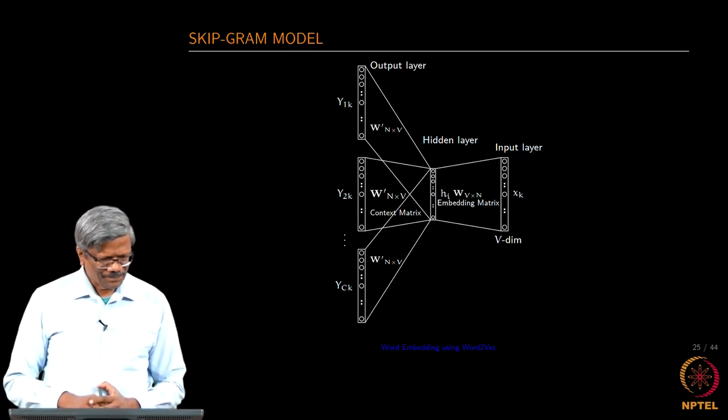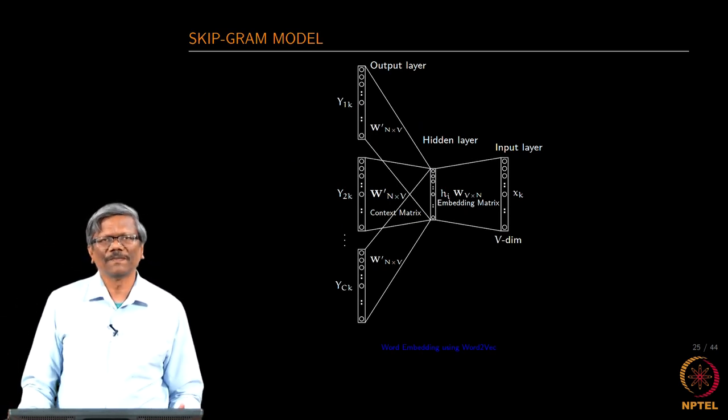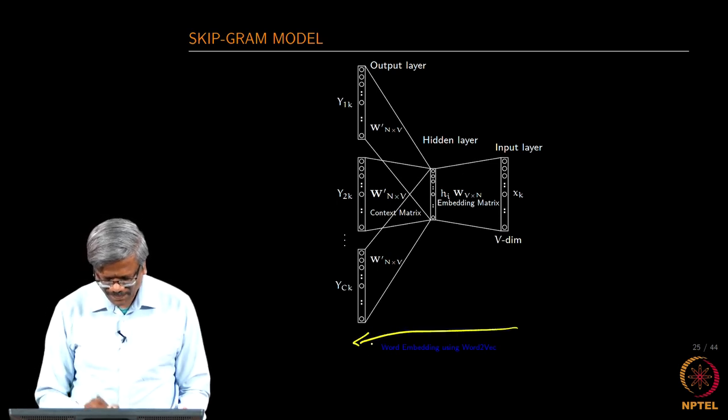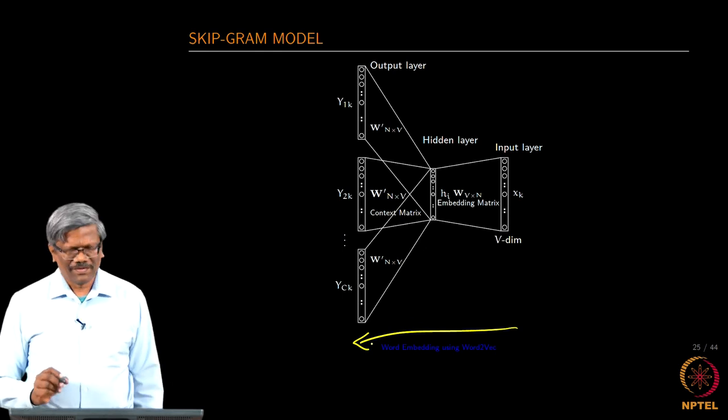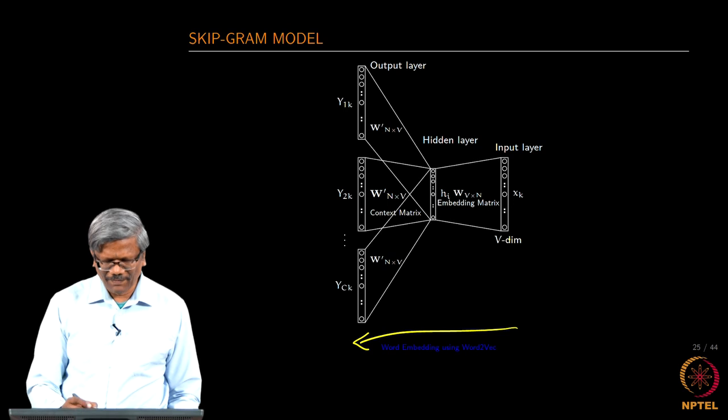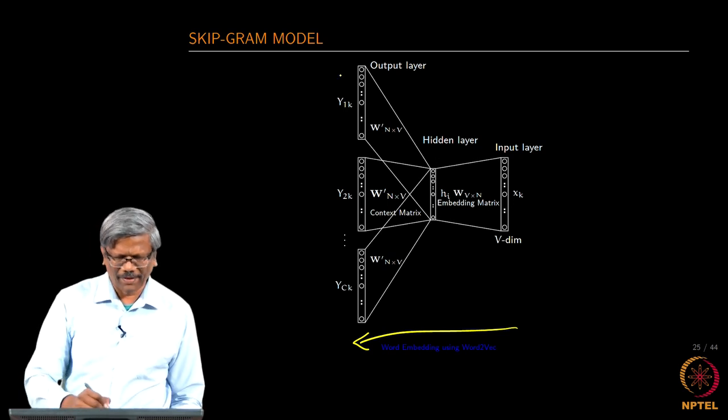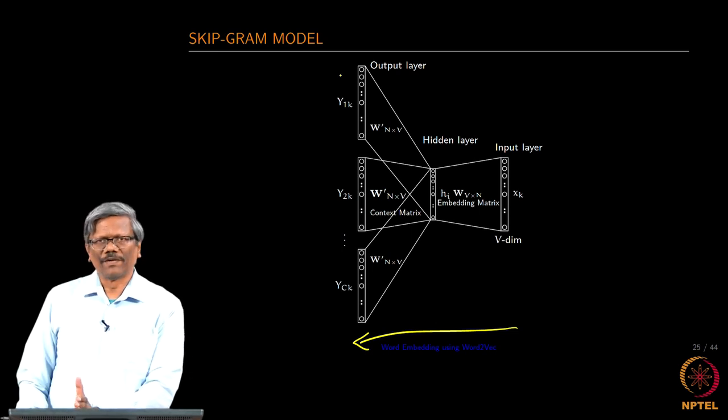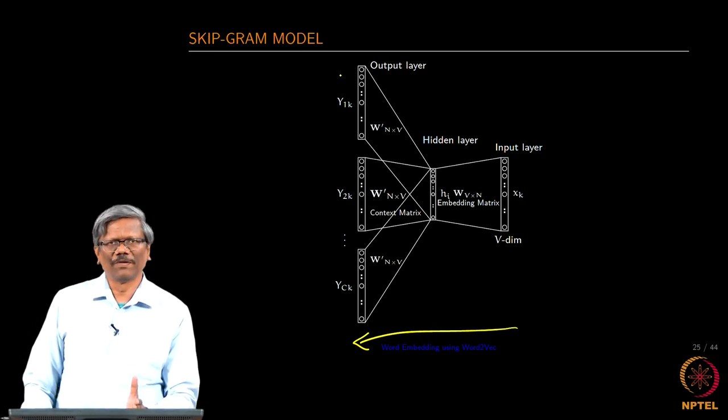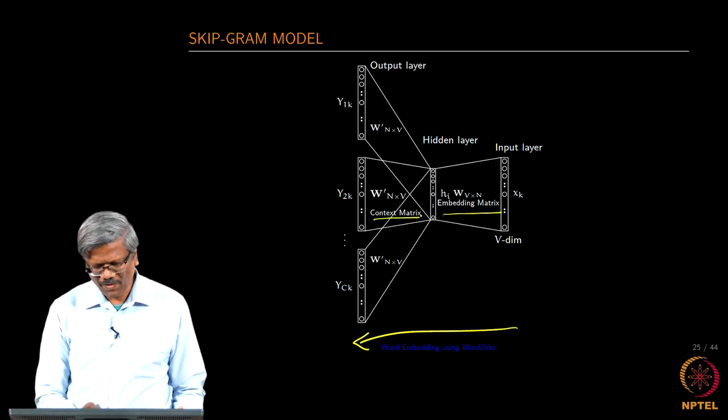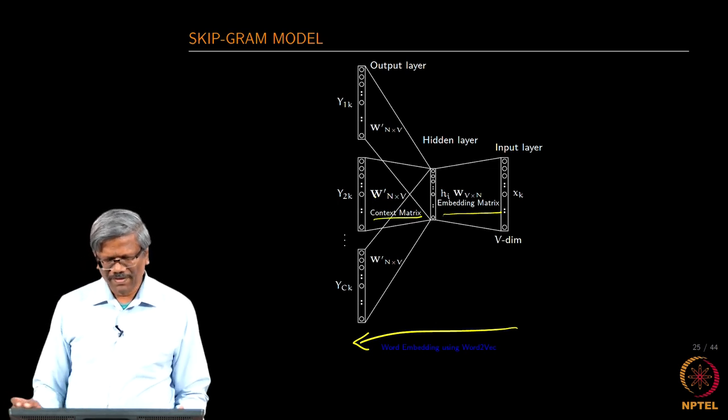This is another I am sorry this is a skip gram model. We have to look at it from this direction. The input layer is here and then we have the hidden layer and the output layer. You know well that for the skip gram we are going to be providing one input word and the target is going to be our context correct. We have the embedding matrix, we have the context matrix and so on.